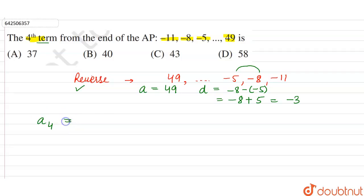So we have to calculate a₄. The formula for calculating the nth term is aₙ = a + (n - 1) × d, where a is the first term, n is the number of terms, and d is the common difference.